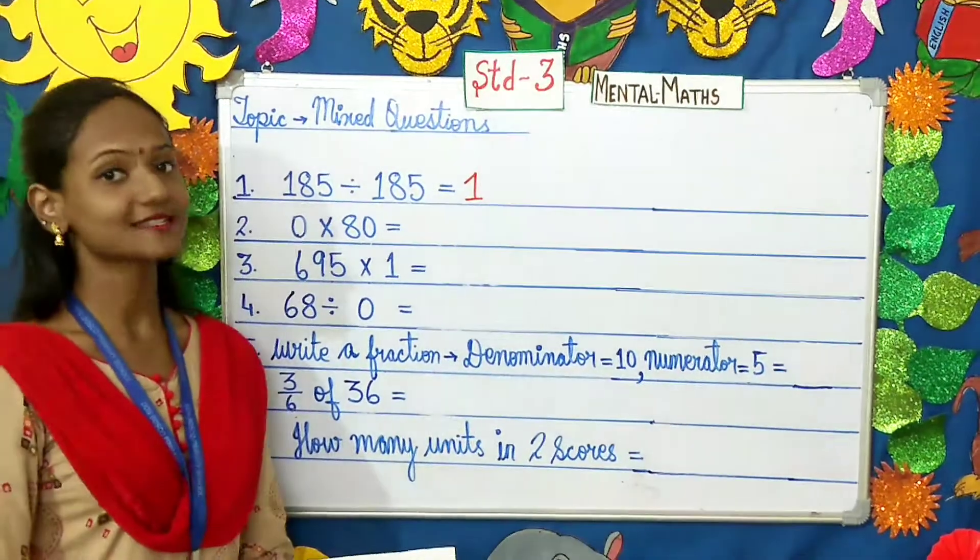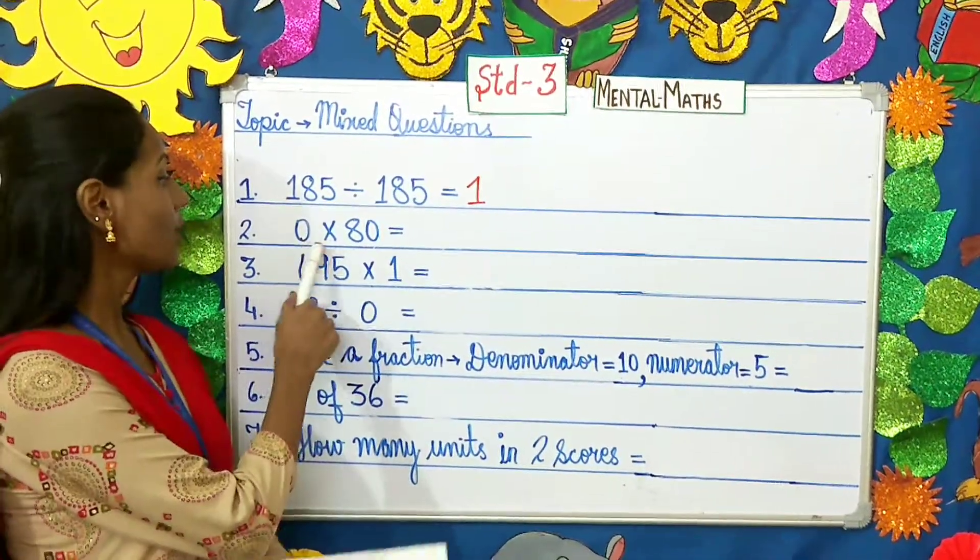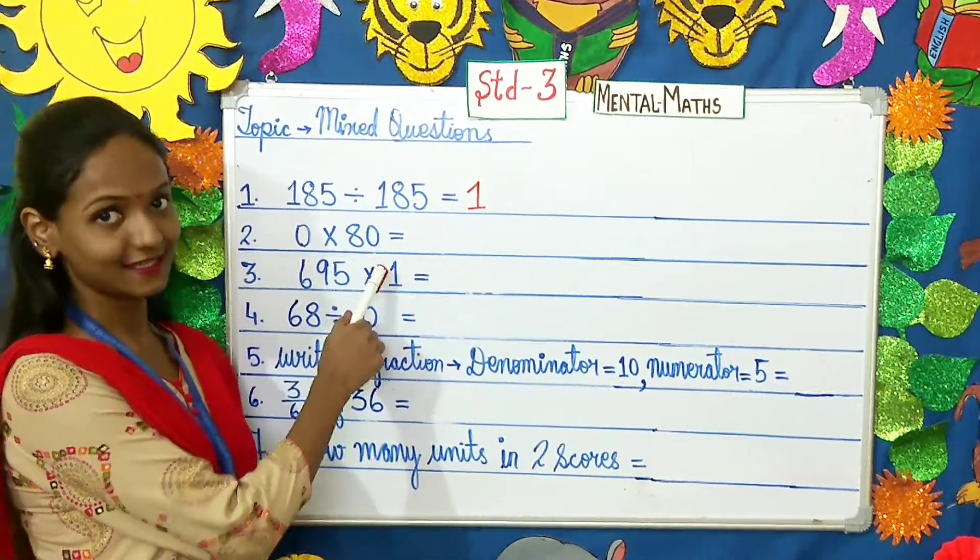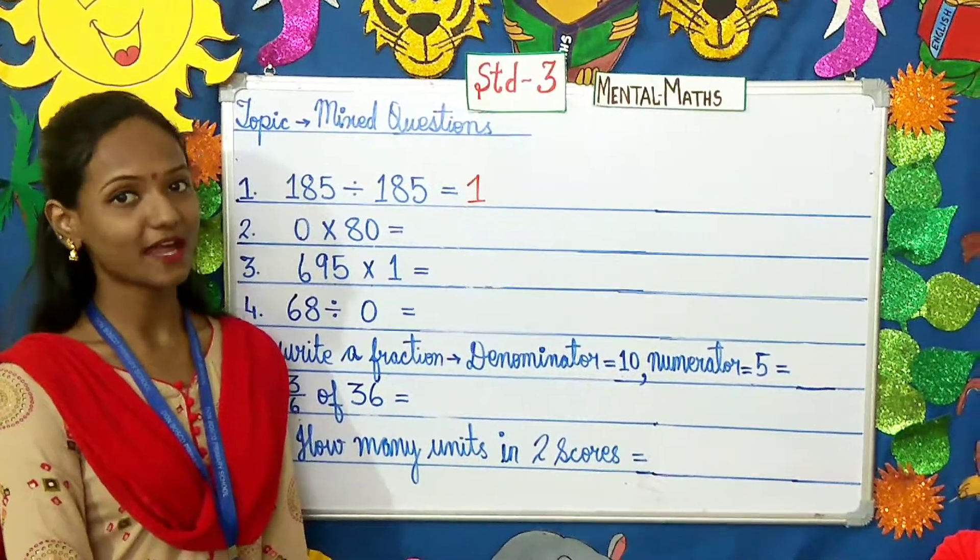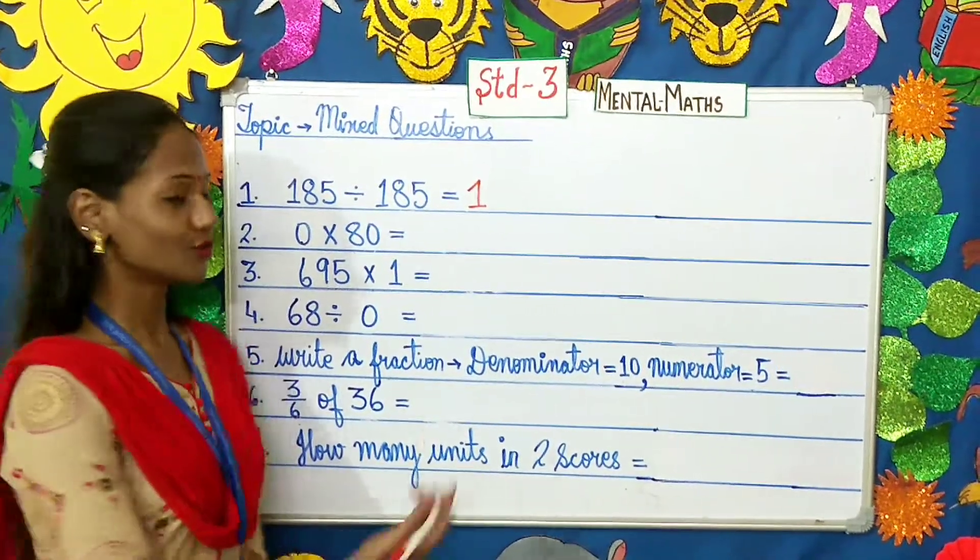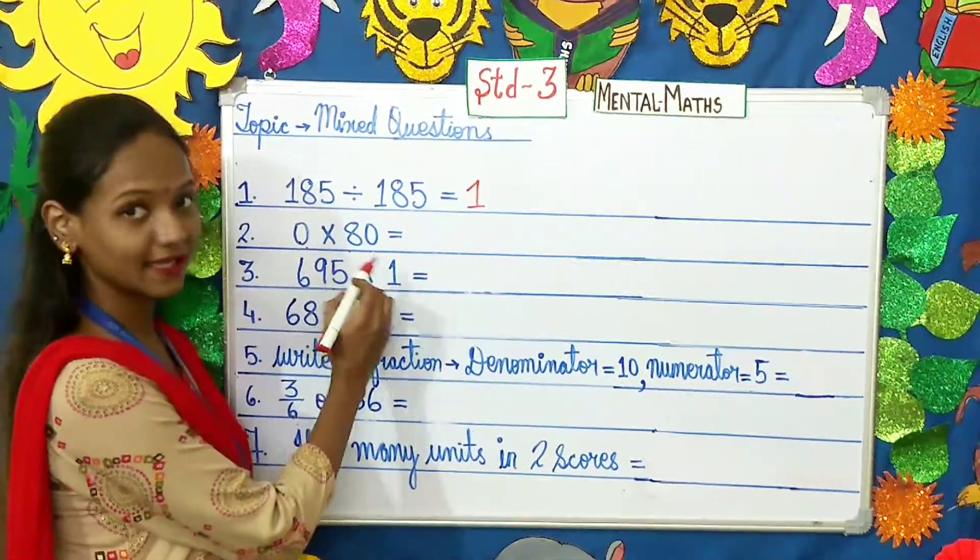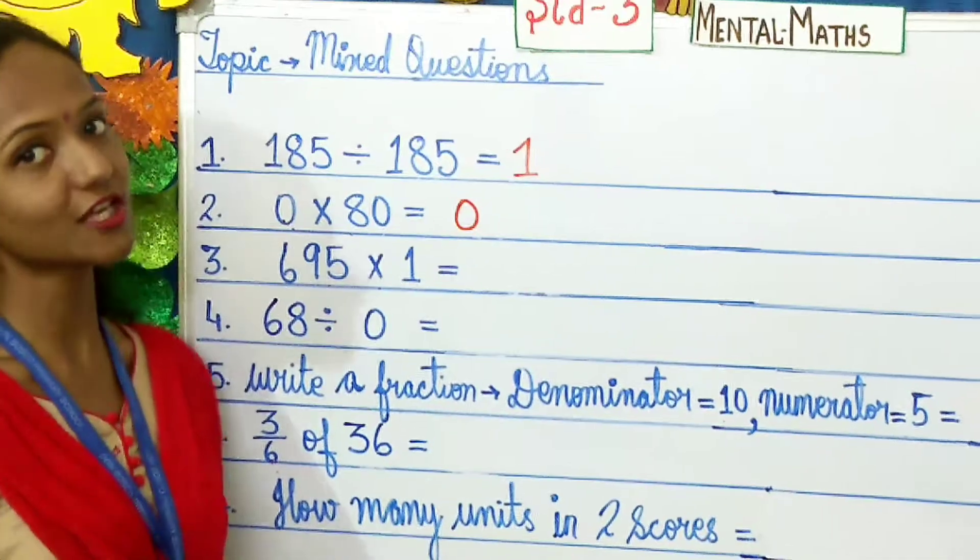Now, moving on to the second question. What is the second question telling us? 0 multiplied by 80. In properties of multiplication children, any number multiplied by 0, the answer will be 0. So, here 0 multiplied by 80, answer will be 0. Moving on to the third question.